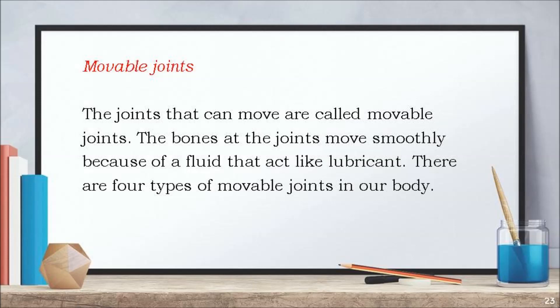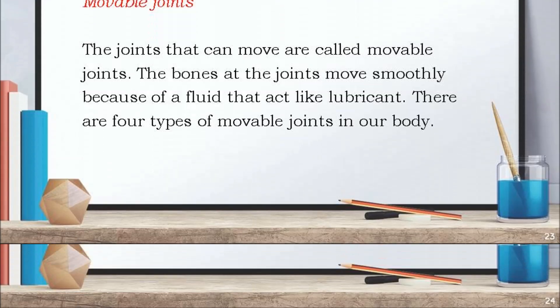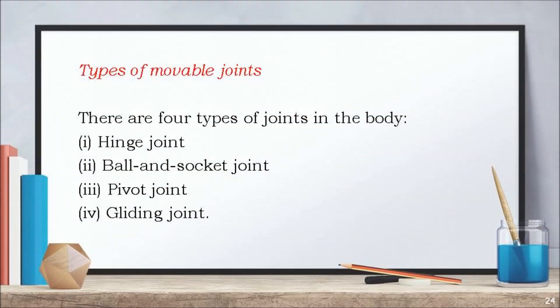There are two types of joints in the body: movable joints and immovable joints. The joints that can move are called movable joints. The bones at the joints move smoothly because of a fluid that acts like a lubricant. There are four types of movable joints in our body: hinge joint, ball and socket joint, pivot joint, and gliding joint.